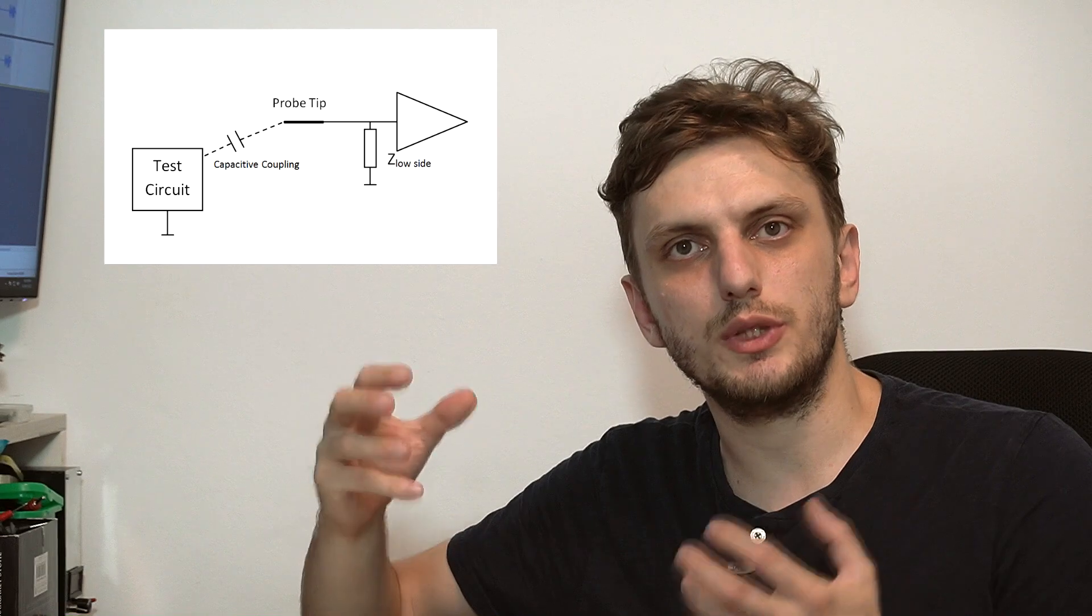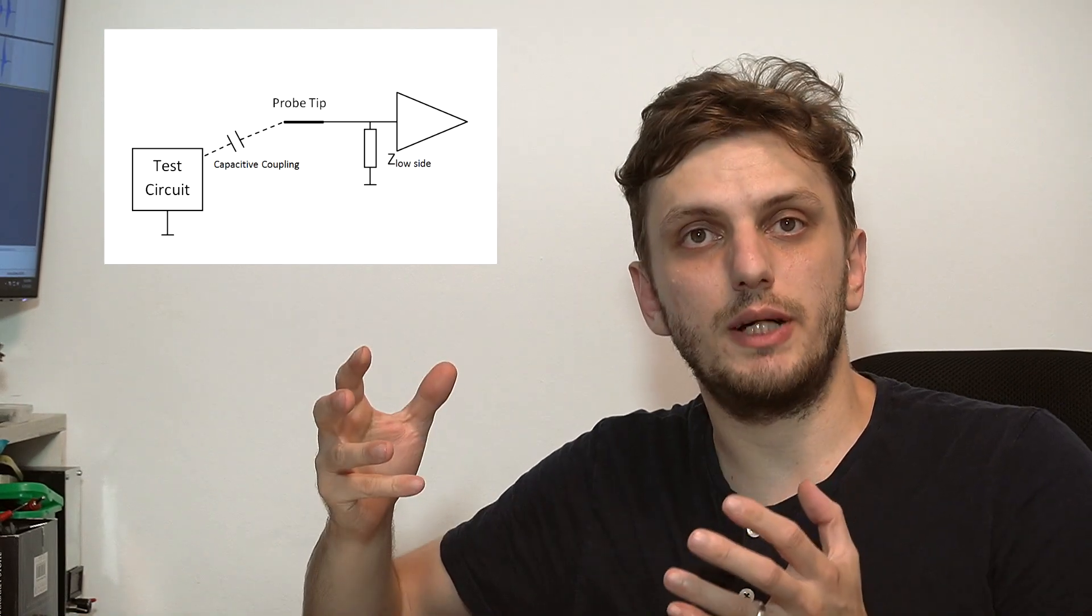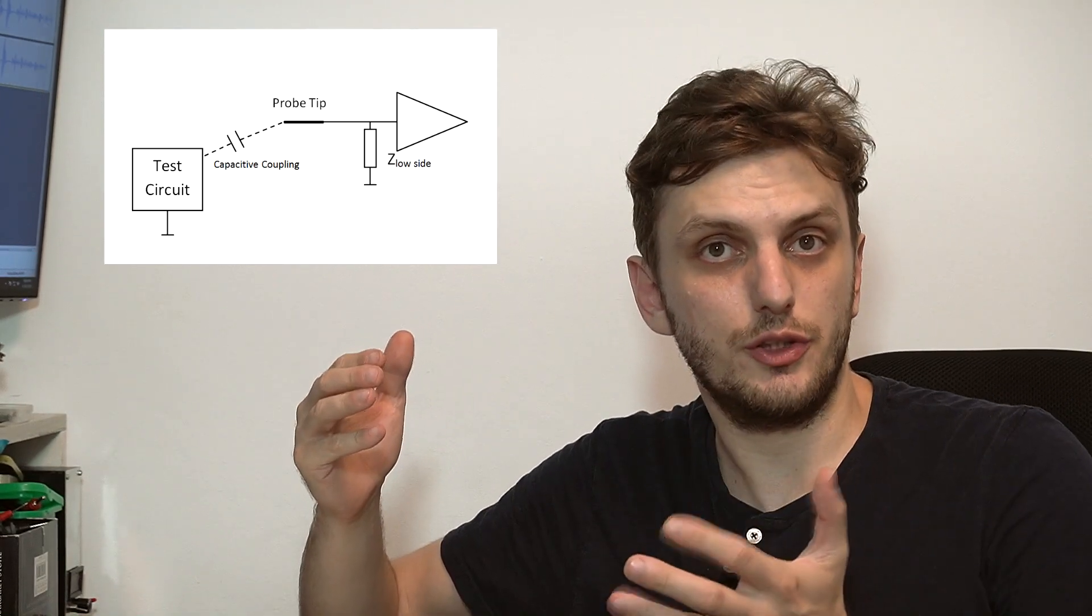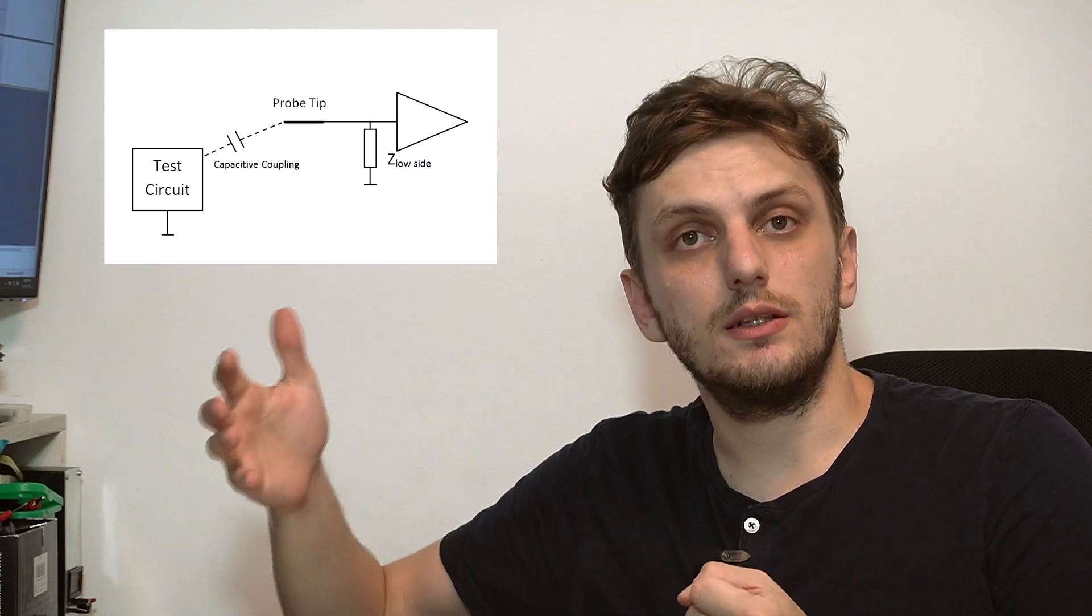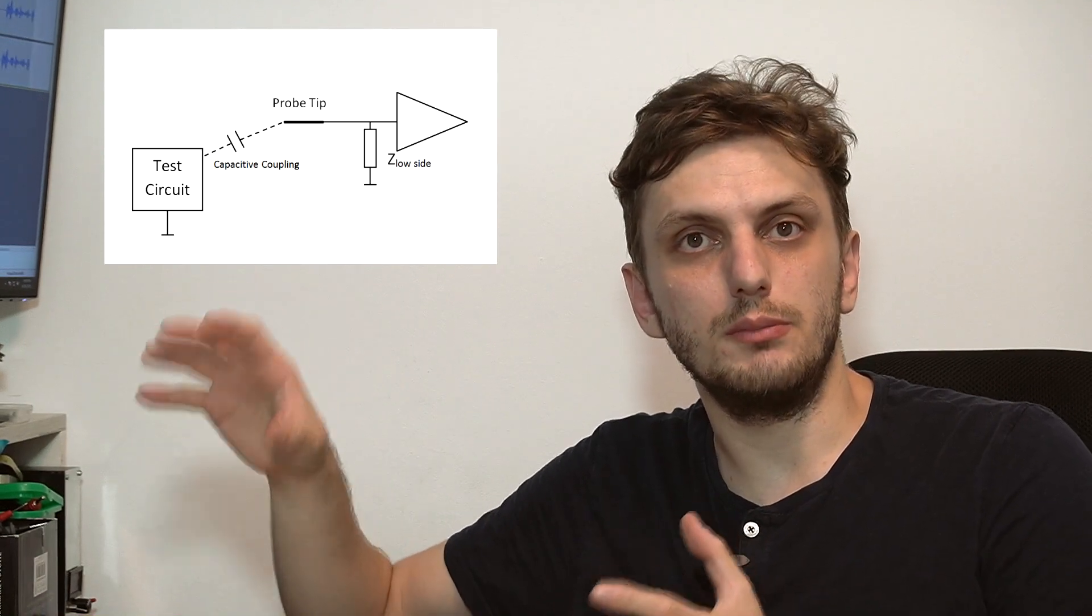So the whole system works like a high-pass filter. You've got your capacitance between the probe and the circuit you're probing and then a low side impedance caused by the cable and the equipment. So the higher this impedance is the lower the frequencies that you can measure.